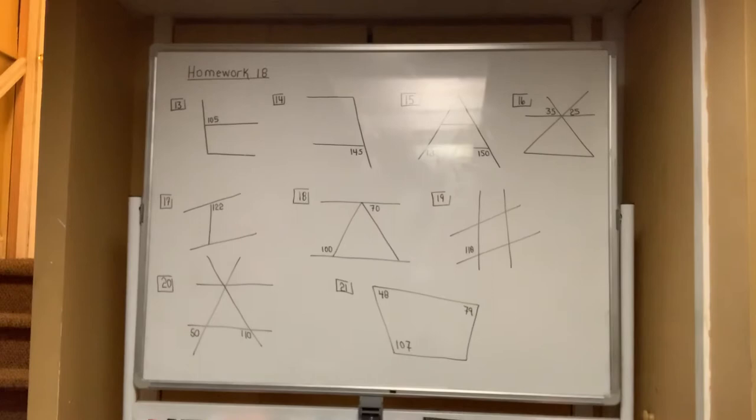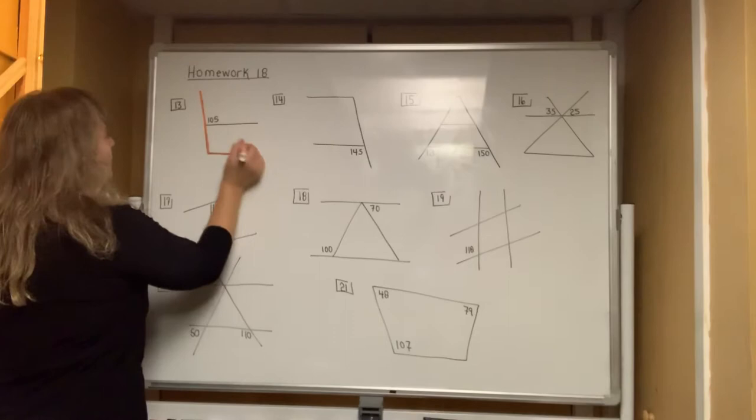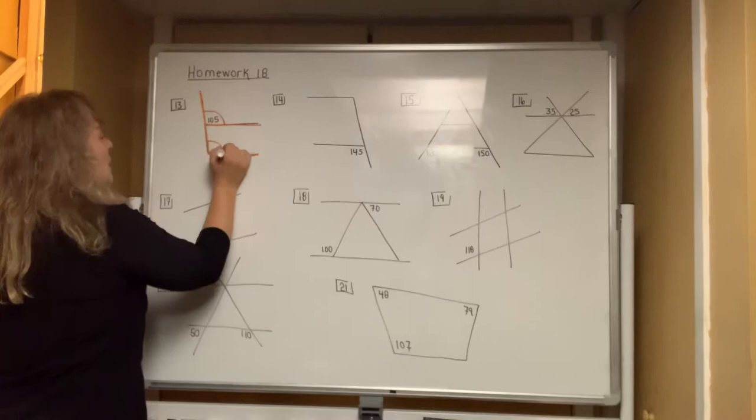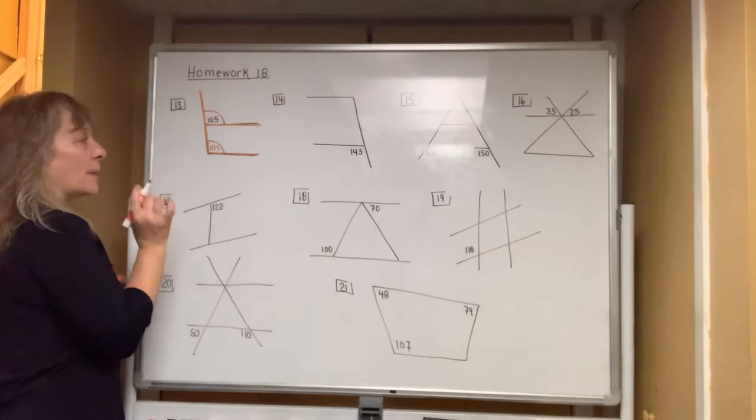This is the second side of homework 18, and you are asked to find every single angle in the diagram. First and foremost, if you ever see the letter F — in this case it's upside down — the angles that are under the branches are always equal. Anytime you see the letter F, you always have equal angles.